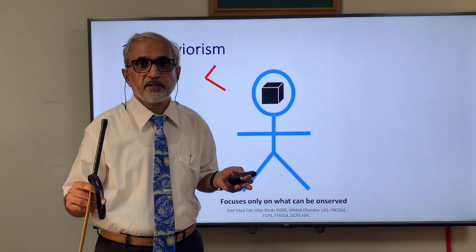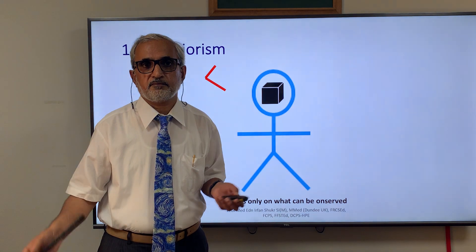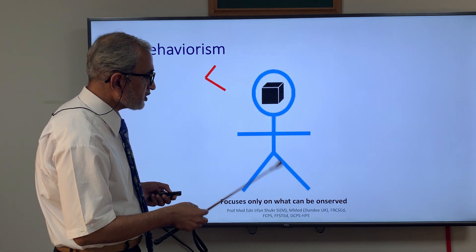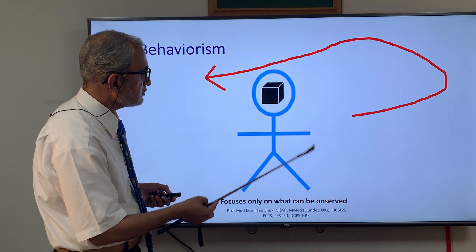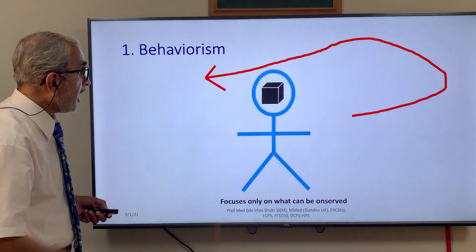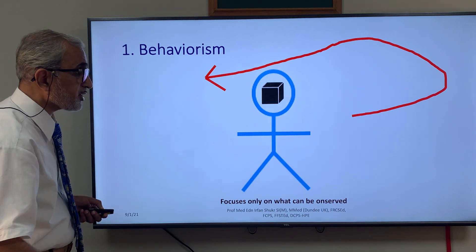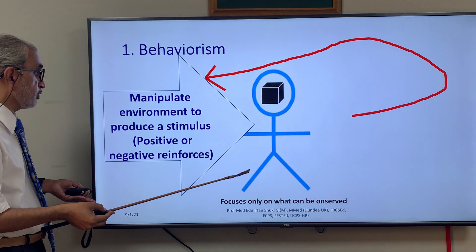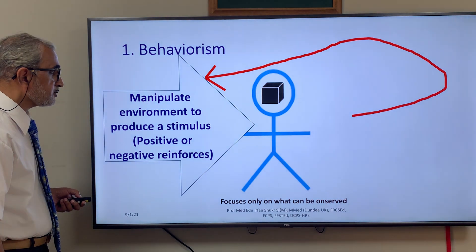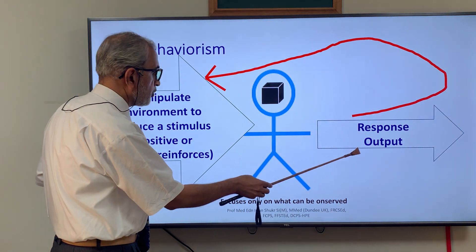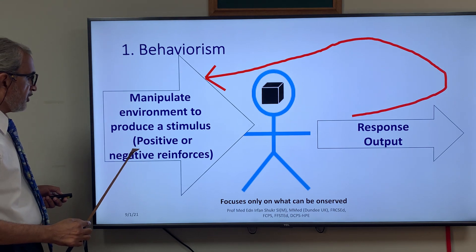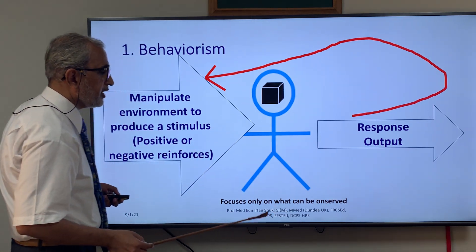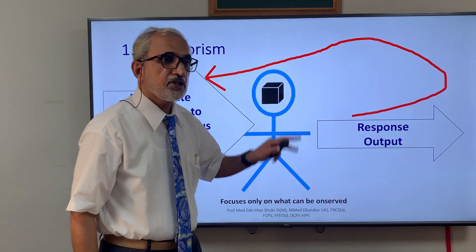According to behaviorism, we consider the student's mind as just a black box. The student shows a behavior which is a response. The teacher manipulates the environment to produce a stimulus — a positive or negative reinforcer — which results in a response output. A positive reinforcer causes behavior to increase, and a negative reinforcer causes that behavior to decrease.